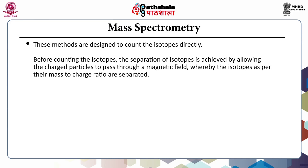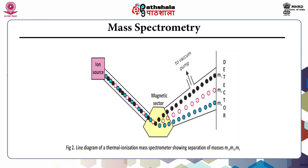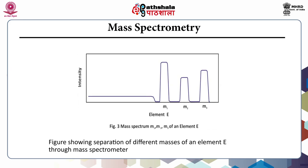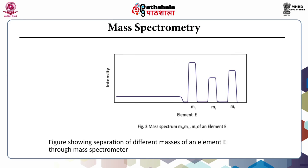Mass spectrometry methods are designed to count isotopes directly. Before counting, separation of isotopes is achieved by allowing charged particles to pass through a magnetic field, whereby isotopes are separated as per their mass-to-charge ratio. The line diagram of a mass spectrometer shows separation of masses m1, m2, and m3. This figure shows separation of different masses of element E through a mass spectrometer, where elements are separated on the basis of mass-to-charge ratio.